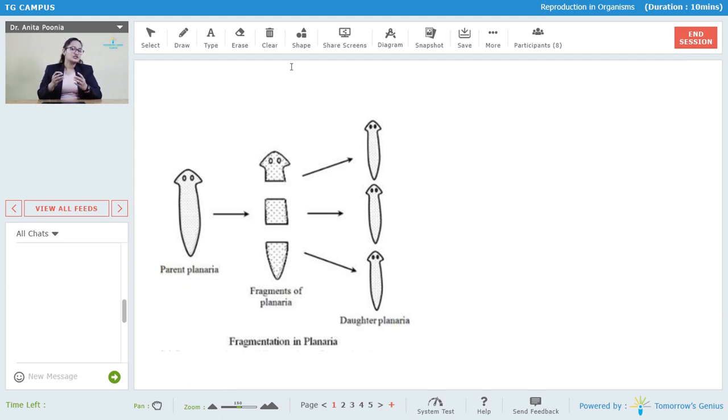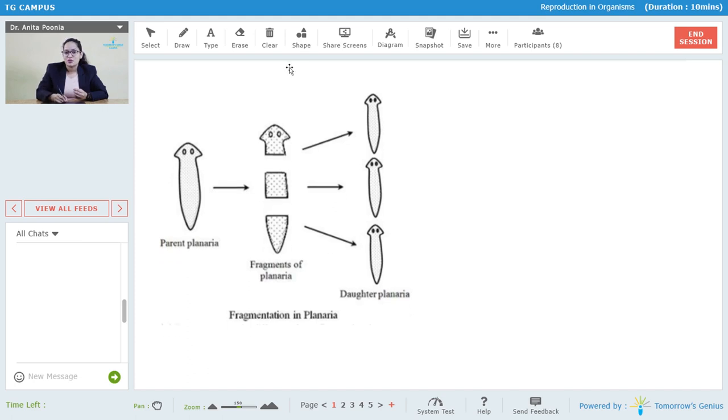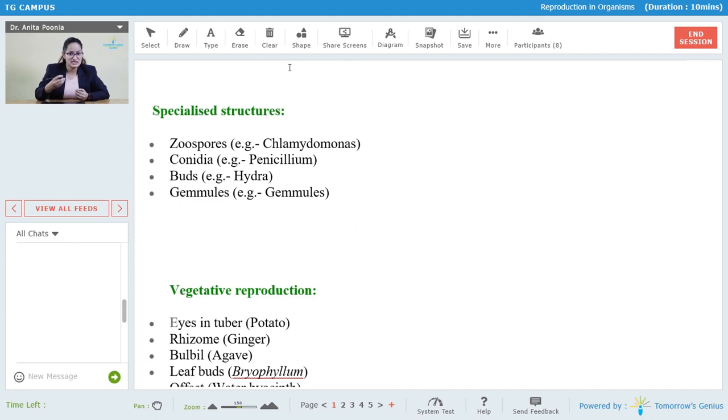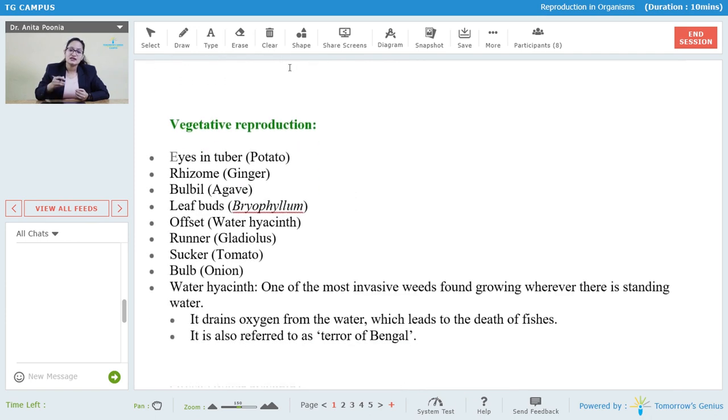Asexual reproduction when takes place in plants, it's called as vegetative propagation. When vegetative propagation or vegetative reproduction takes place, there are other things or other parts which help in asexual reproduction like eyes in the tuber, rhizome in the ginger, bulbils in agave plant, leaf buds, offsets, runners, suckers, bulbs, all of that.